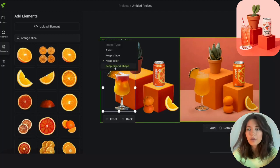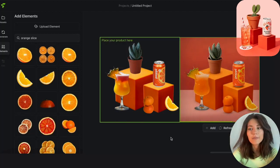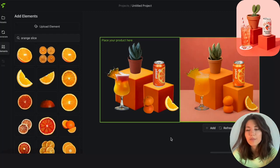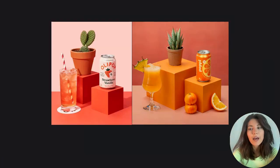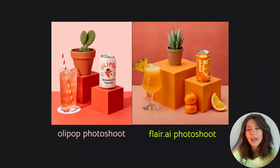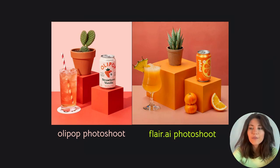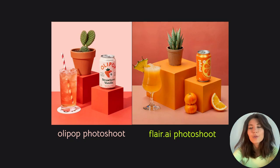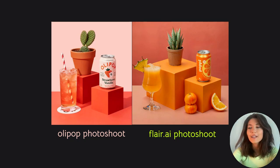And amazing! This is a very similar shoot to the one that Olipop did, which probably cost thousands of dollars and a ton of planning. But you can do them at home now using flair.ai for $10 a month — extremely affordable for the everyday e-commerce seller. Thank you so much for watching, hope to see you soon!